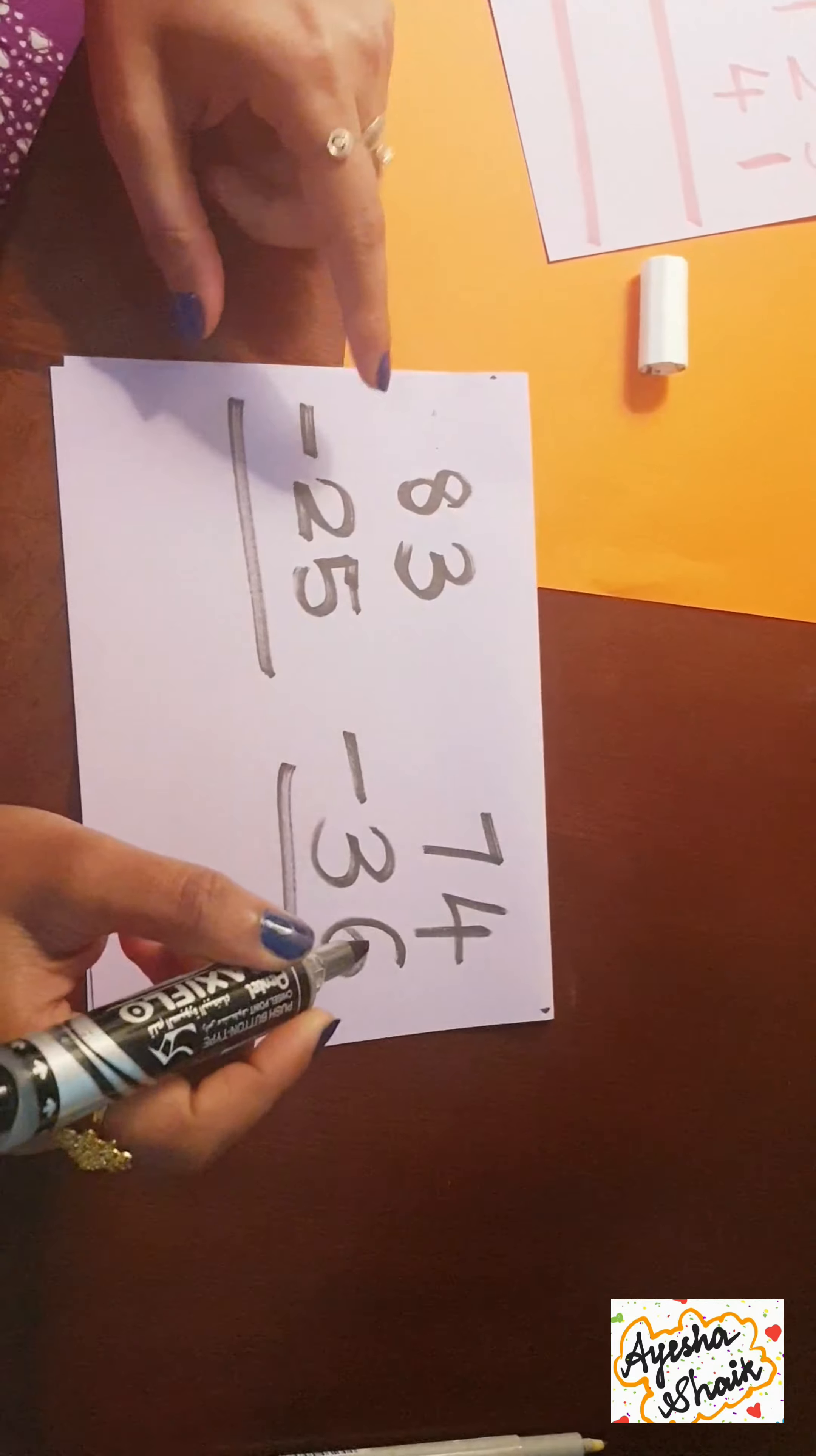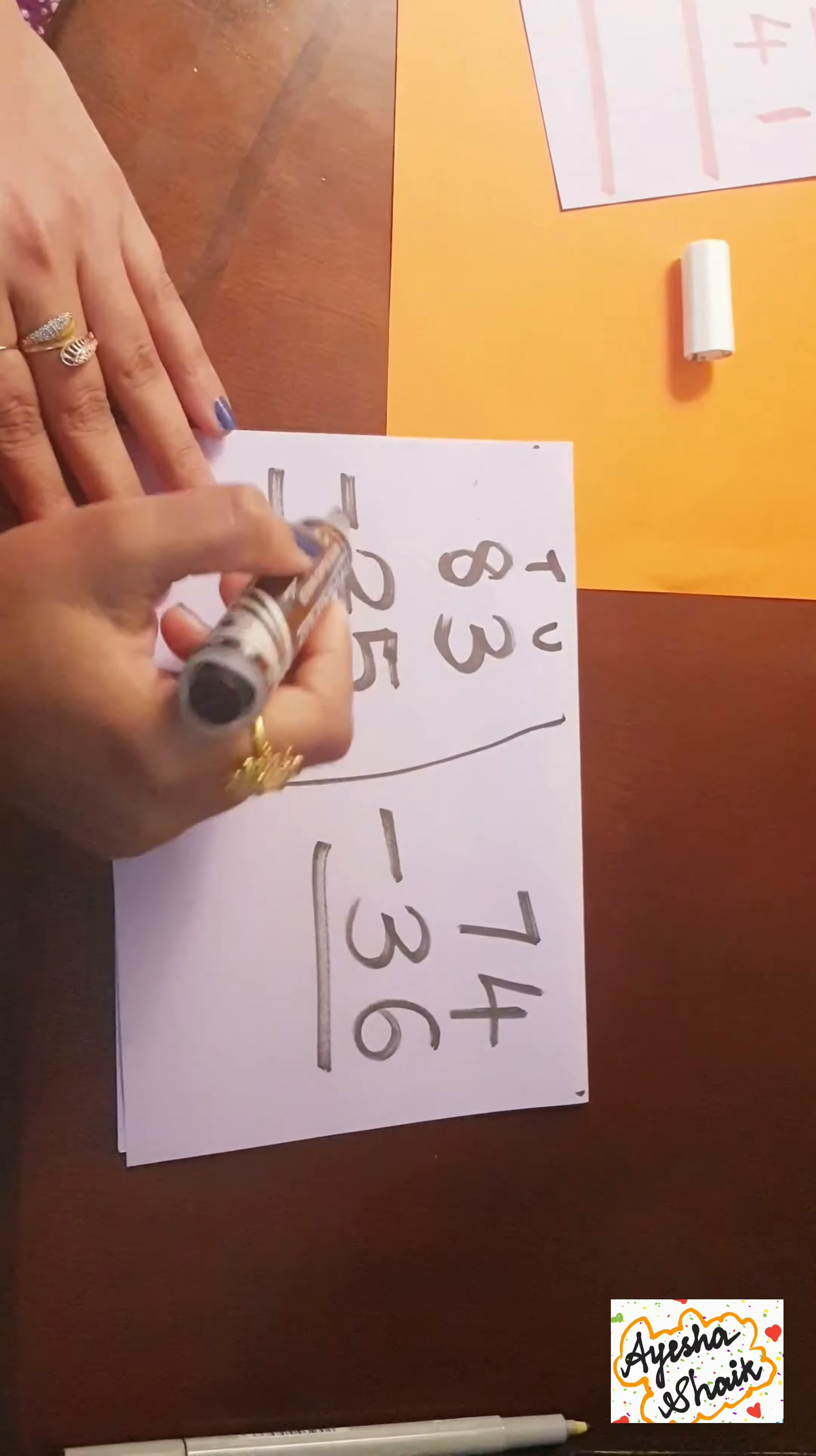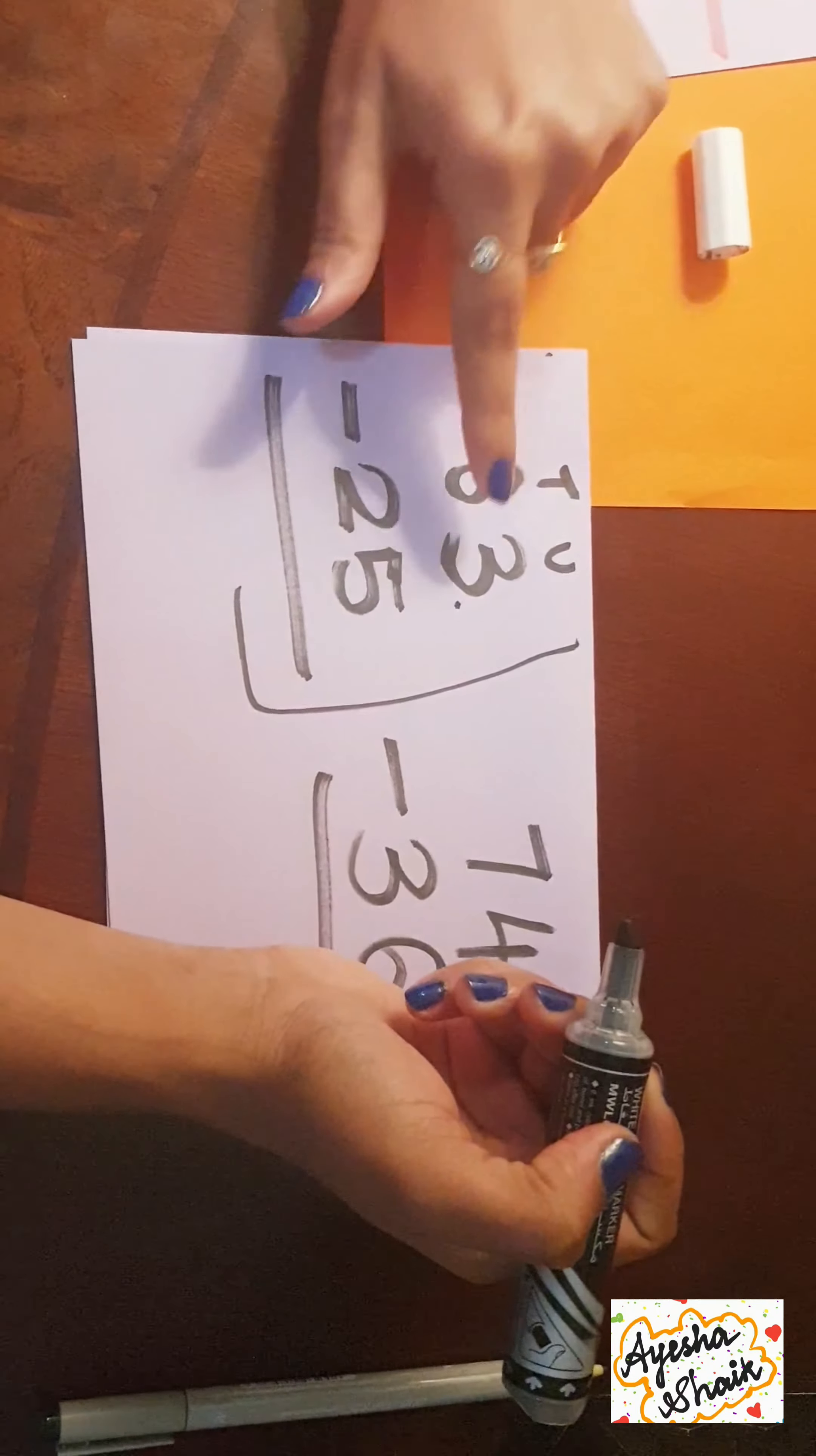Okay, so let's begin. This is your subtraction number sentence. Always remember to write the place value - units and tens. Three minus five - can you really find out three minus five? Always remember for subtraction, the first number should always be the bigger one. Three is smaller than five, so we cannot take away. Now we need to borrow.